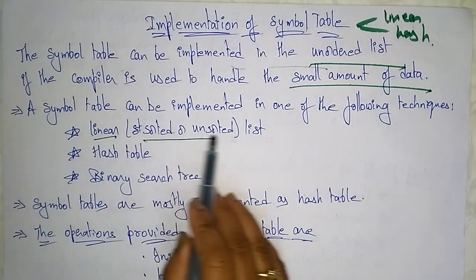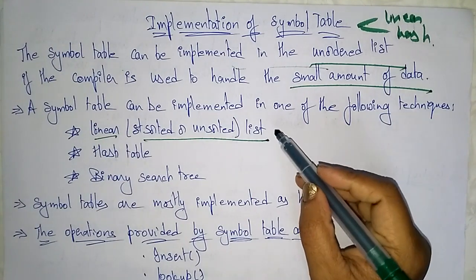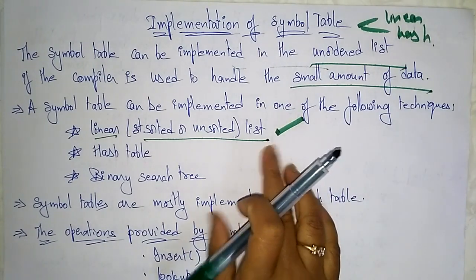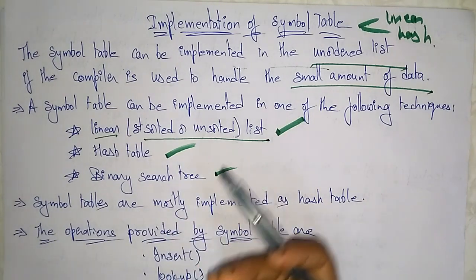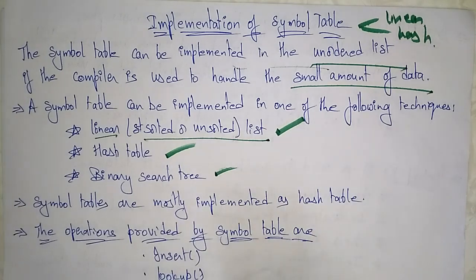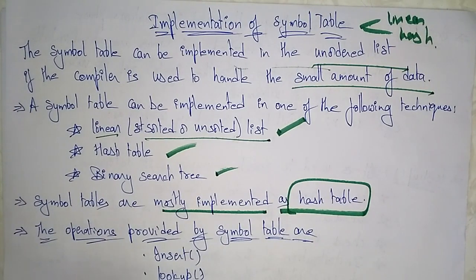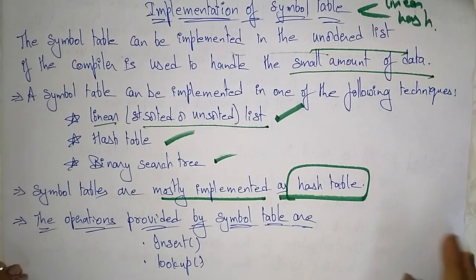In the hash format, a symbol table can be implemented using one of the following techniques: a linear sorted or unsorted list, or a hash table, or even a binary search tree. Based on the type of language you are using, you can prefer the symbol table implementation. Mostly, the symbol tables are implemented using hash tables.